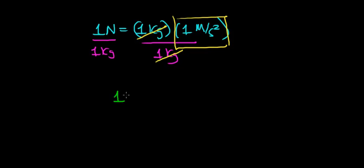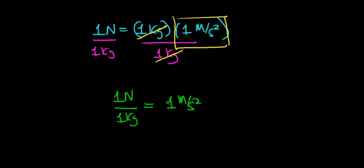To summarize what I just found: when I divide a unit of a Newton by a unit of mass, I get a unit of acceleration, which is a unit of a meter per second per second, or a unit of a meter per second squared. When you divide a unit of force by a unit of mass, you get a unit of acceleration.